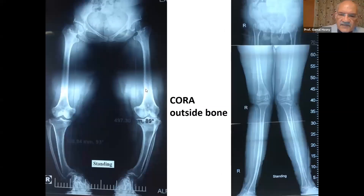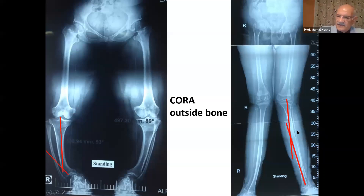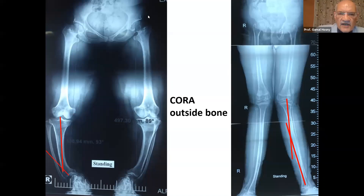This is a clinical example — a case of achondroplasia, long-standing achondroplasia without any treatment before, with this severe deformity. If you draw the mechanical axis of the proximal segment and the mechanical axis of the distal segment, they are going to meet outside the bone. That means you have two CORAs — a multiapical deformity. Similarly, with severe valgus deformity, if you draw the mechanical axis of the proximal and distal segments, they meet outside the bone, confirming a multiapical deformity with more than one CORA.